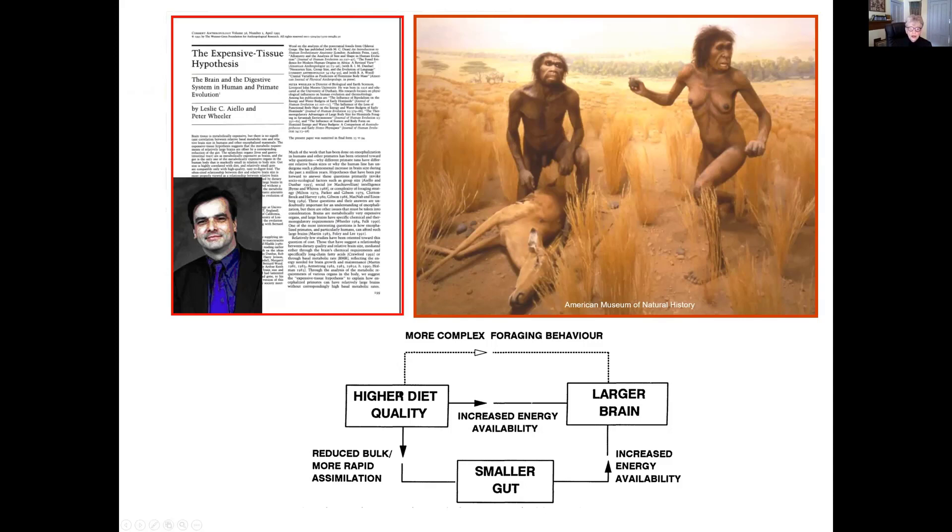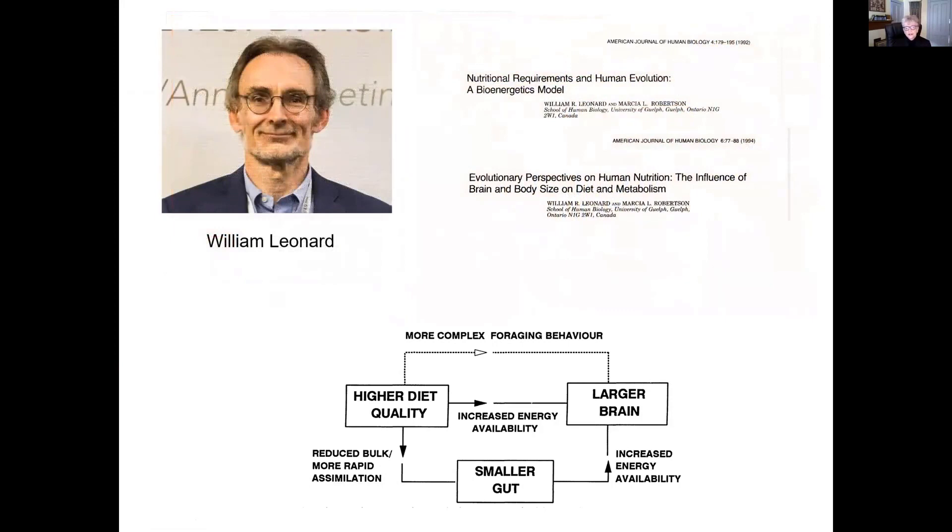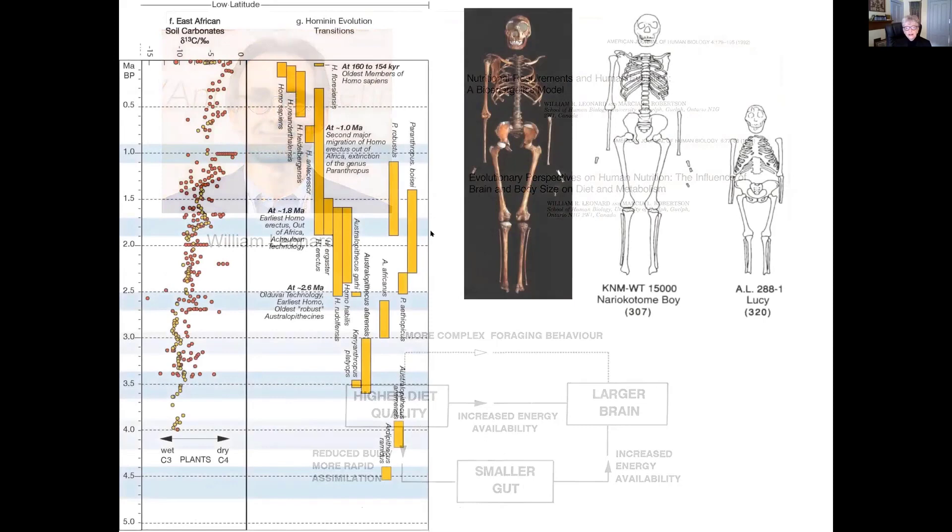Now, in the paper, the expensive tissue hypothesis is basically a high quality diet. You have your reduced bulk, more rapid assimilation, resulting in a smaller gut. The energy is available to support a larger brain. But we also argue that a higher quality diet could directly provide energy available to the brain. And then in terms of why the brain may have evolved, the more complex foraging behavior feeding into the evolution of the larger brain. Now, as many hypotheses, this general idea was in the air. And particularly Bill Leonard had two papers that were published at the time, one in 1992, one in 1994, arguing the importance of the high quality diet to the larger brain size. The unique factor of the expensive tissue hypothesis is this route through the smaller gut, making the increased energy available. It's also interesting that neither Peter Wheeler or I knew of Bill Leonard's work at the time.